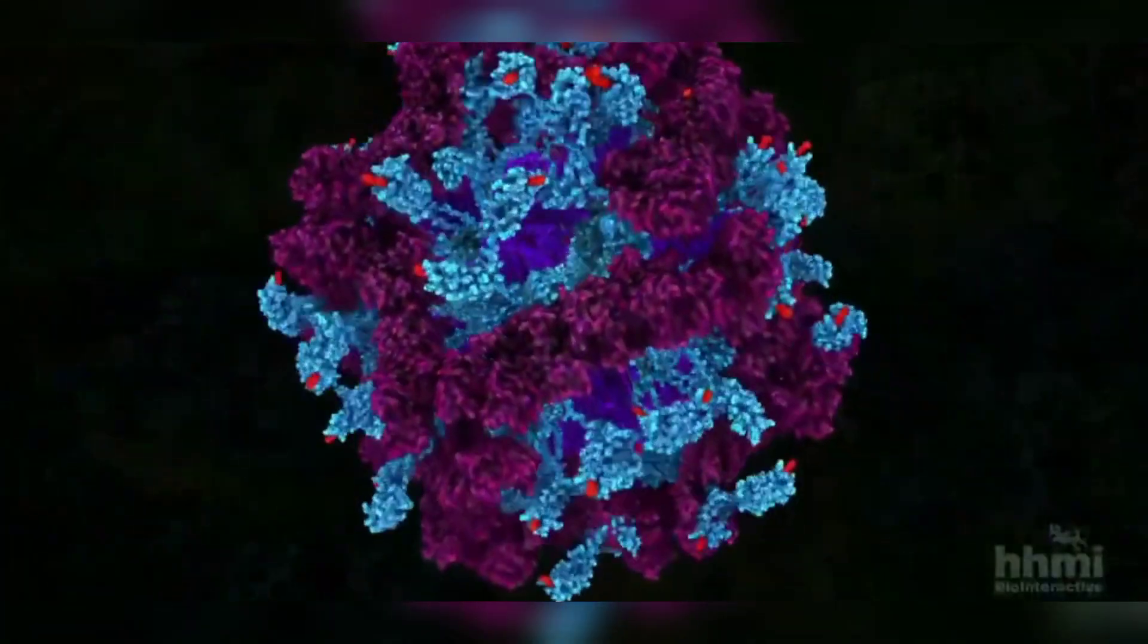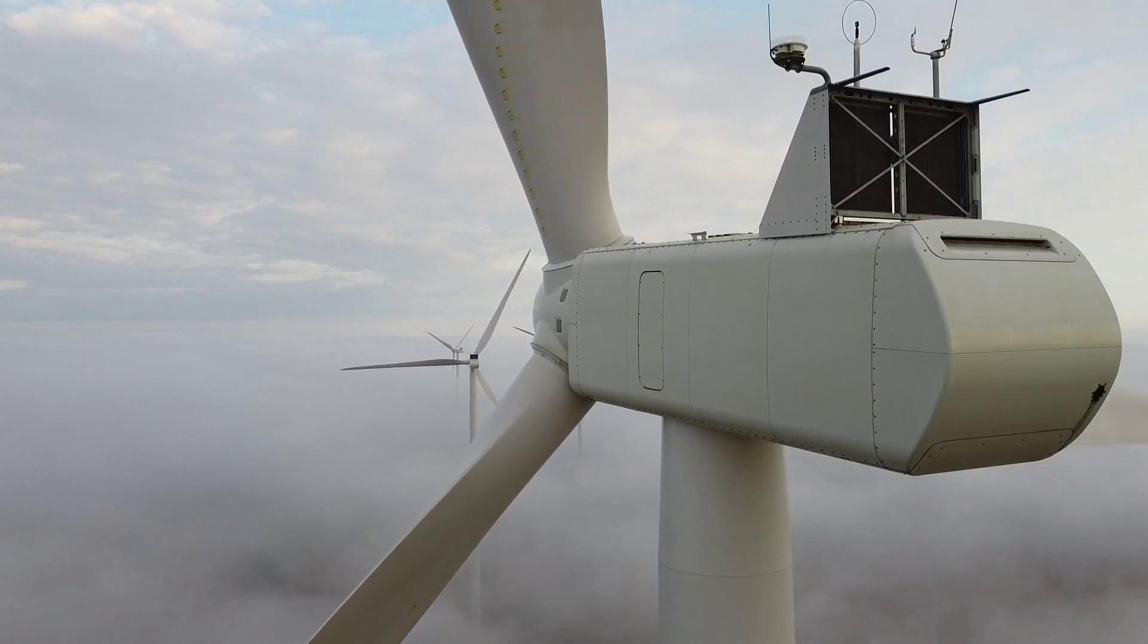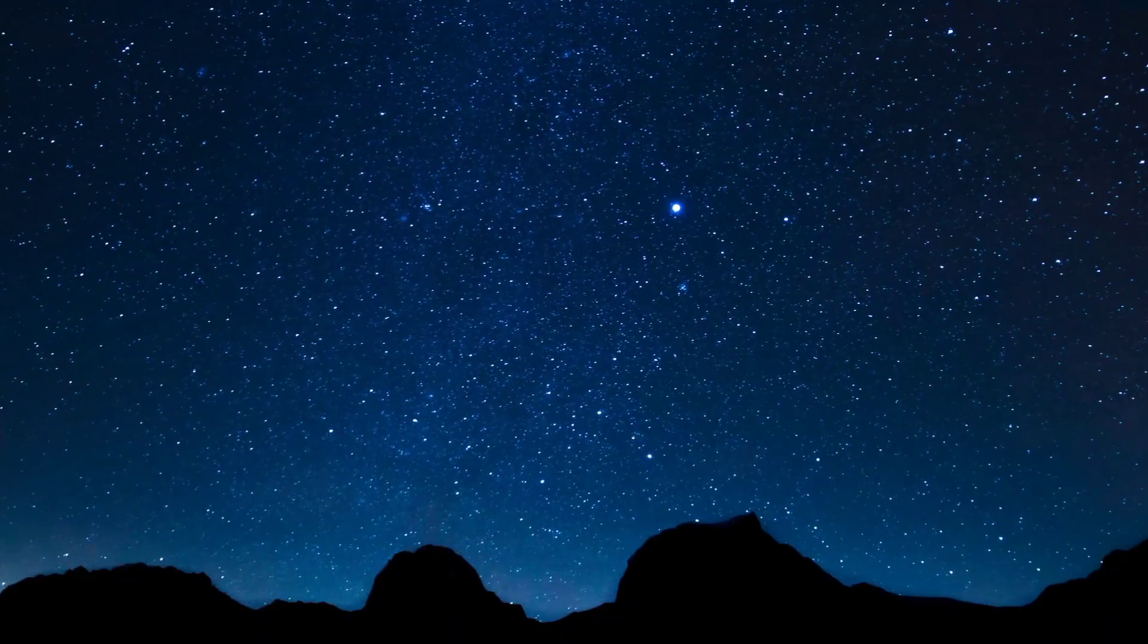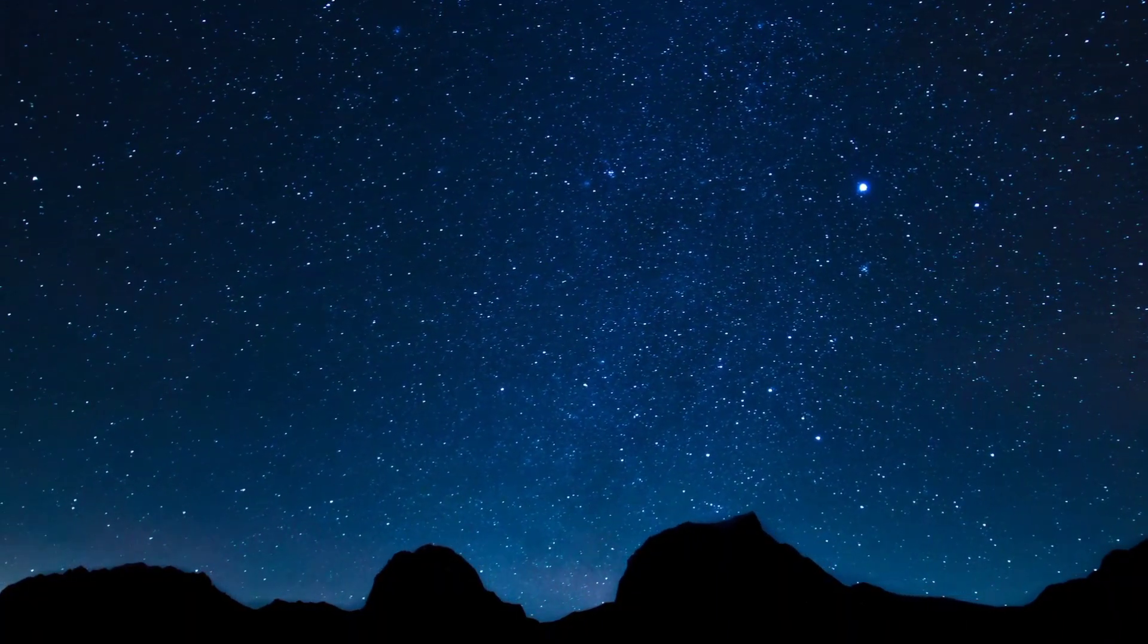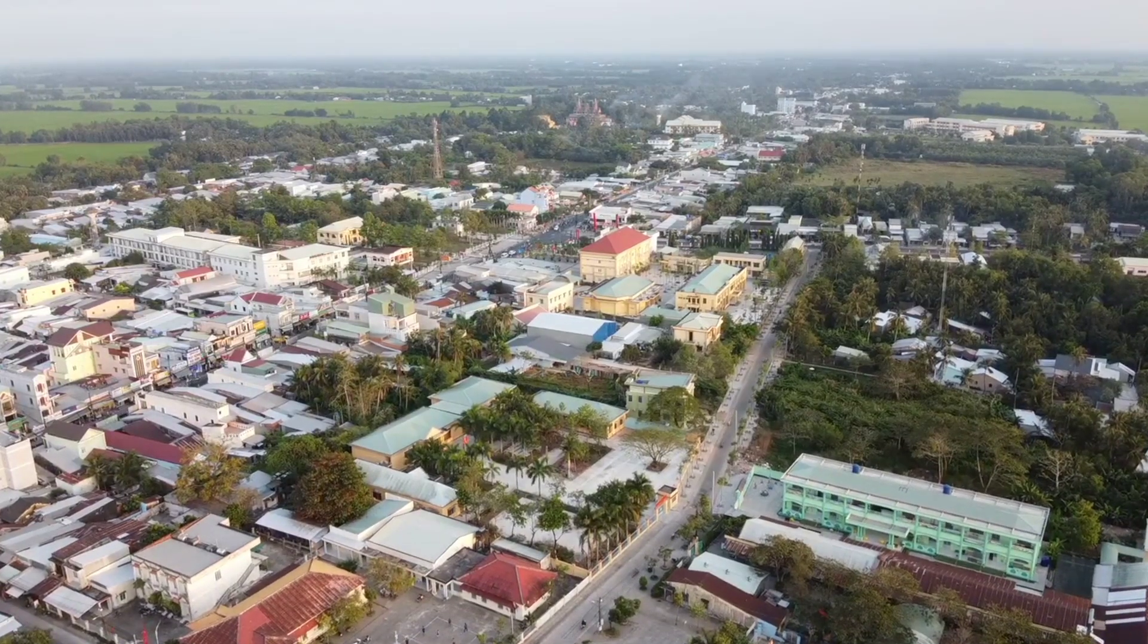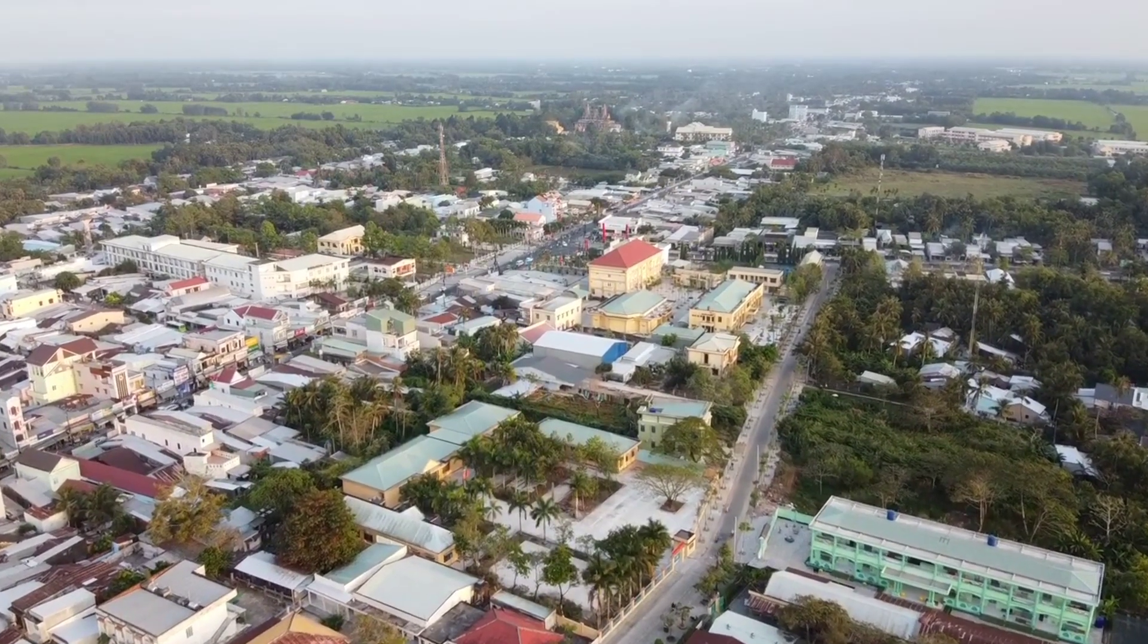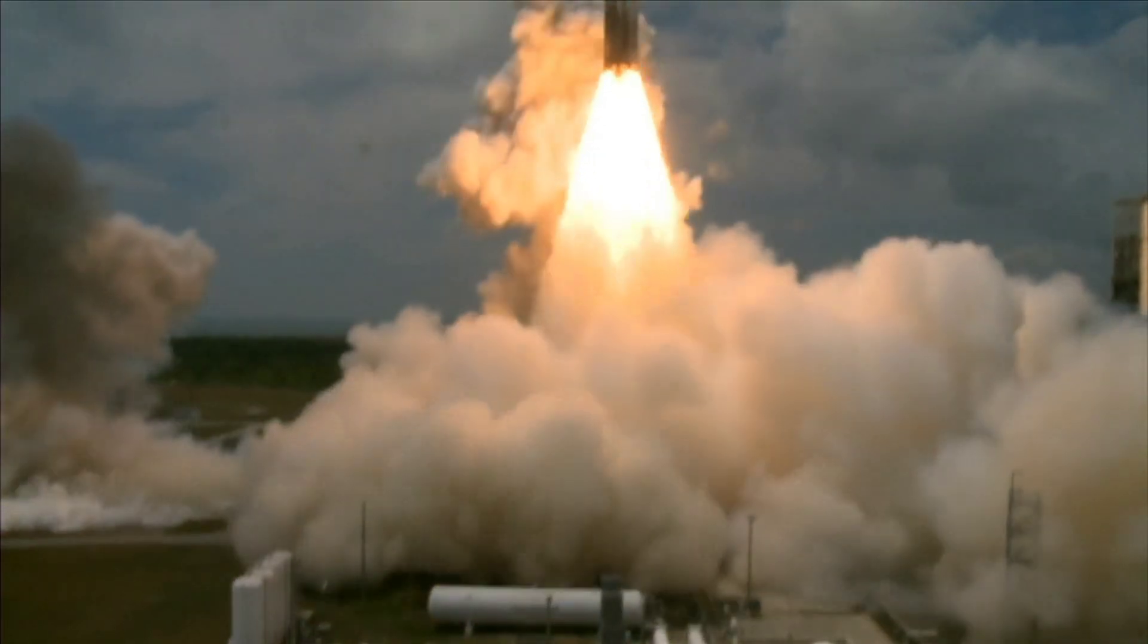The discovery of the HUC enzyme has the potential to revolutionize the energy industry. The ability to generate electricity from atmospheric hydrogen opens up a new avenue for clean and sustainable energy sources. The HUC enzyme can be used to power electronic devices in remote locations where traditional power sources may not be available. It can also be used to power vehicles, homes, and businesses.